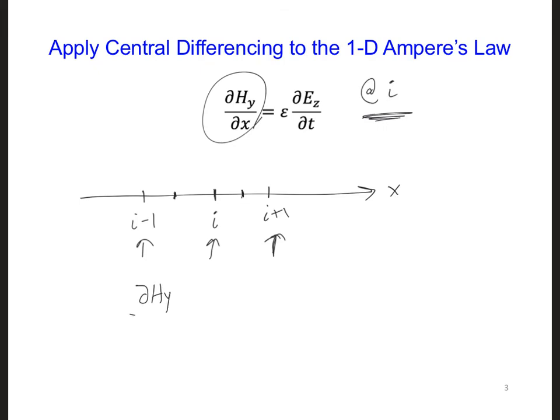If we do this, we get for dHy/dx, it's approximately equal to Hy at i plus 0.5 minus Hy at position i minus 0.5, all divided by the distance between them. And since we had said the distance between i and i minus 1 is delta x, this is also going to be delta x. So I'm going to put a delta x here.